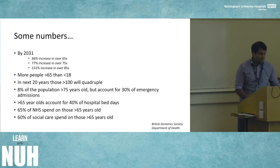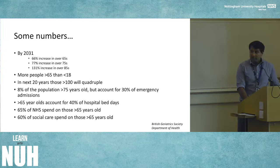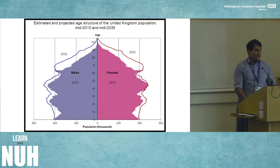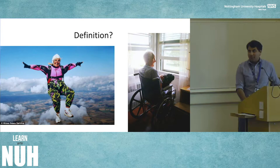These numbers show the changing demographic. The number of centenarians over the next 20 years will quadruple, which has an impact on not only the NHS but social care and spending and budget. This pictorial representation — the population pyramid — shows how the Christmas tree shape will become more top-heavy with older people, looking more like a coffin rather than a pyramid.